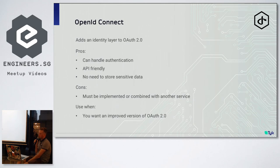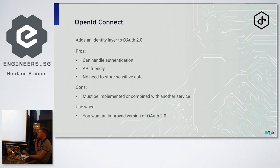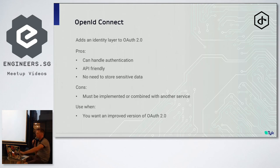Next option is OpenID Connect. This is basically the missing identity layer to OAuth 2 — and when I was talking about OAuth 2 being superseded, this is the technology I'm referring to. It handles authentication natively, was built to be API-friendly based on criticisms OAuth 2 received, and uses delegation like OAuth 2 so there's no need to store sensitive data in your own application — you can store it in the identity server. If you were to try and implement it yourself it would be quite difficult, but most people would use either an identity provider or software they install on their own infrastructure. I would say use this when you want an improved version of OAuth 2.